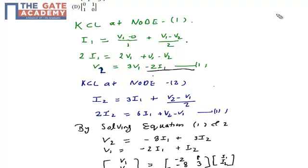Now, you have two equations. You need to just rearrange it because we know that the equation of the Z-parameters is V1 equals I1 z11 plus I2 z12. Similarly, V2 equals I1 z21 plus I2 z22.